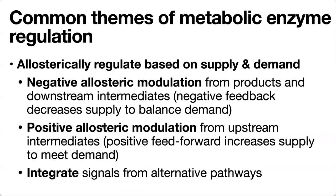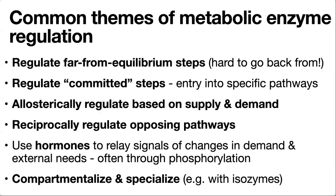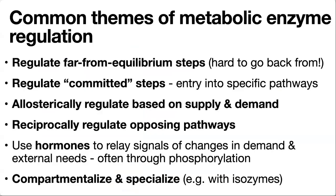We can also integrate signals from alternative pathways. Maybe we haven't done a lot of glycolysis, but we still have a lot of energy. If we have products like citrate coming from fatty acid oxidation, we can use that as a signal that we've got plenty of energy. We can also use hormones to relay signals of changes in demand. Often these changes are passed on through phosphorylation cascades that alter enzyme activity, including enzymes that produce small molecules acting as allosteric regulators — such as F2,6-BP, a modulator of PFK1 and FBPase1 regulated by insulin and glucagon.